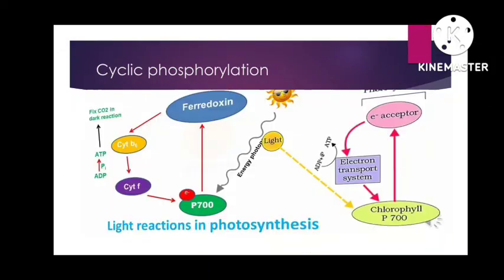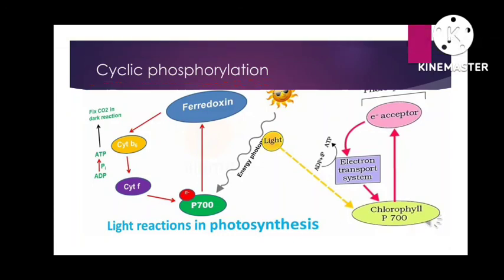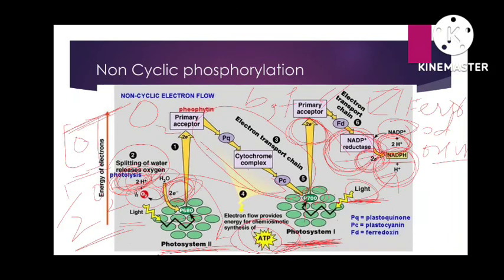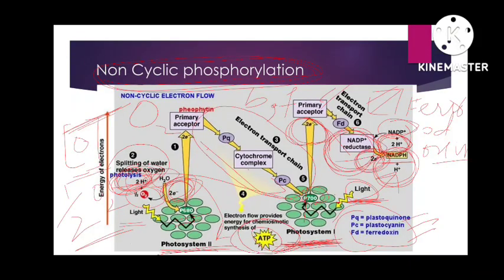Cyclic phosphorylation is not as common as non-cyclic, but occurs when the cell is low on ATP. We will talk about this in detail in later videos. The abbreviations to note are: plastoquinone, plastocyanin, and ferredoxin.